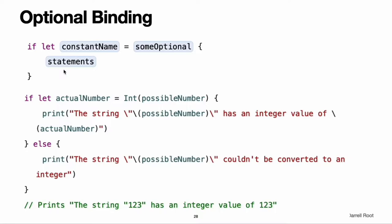You can rewrite the possibleNumber example from the optional section to use optional binding rather than forced unwrapping. This code can be read as: if the optional Int returned by Int(possibleNumber) contains a value, set a new constant called actualNumber to the value contained in the optional. If the conversion is successful, the actualNumber constant becomes available for use within the first branch of the if statement. It has already been initialized with the value contained within the optional, so you don't use the exclamation mark suffix to access its value. In this example, actualNumber is simply used to print the result of the conversion.